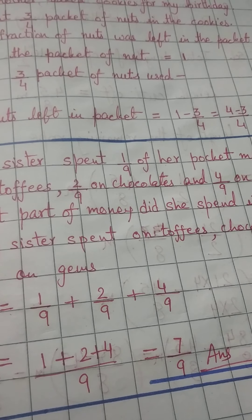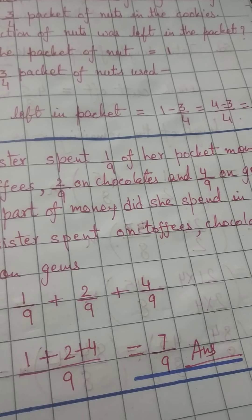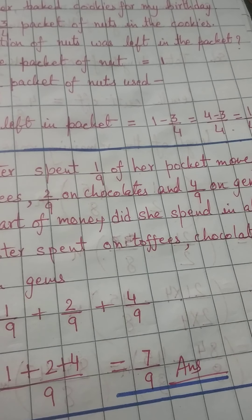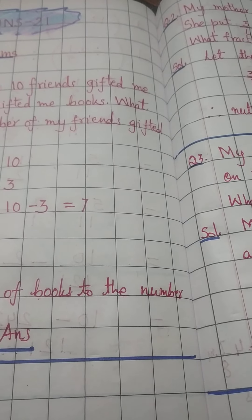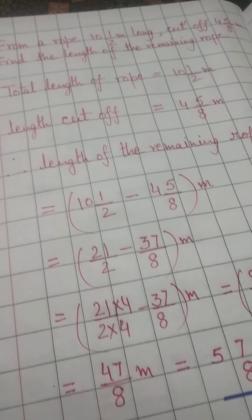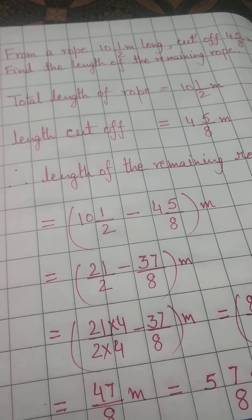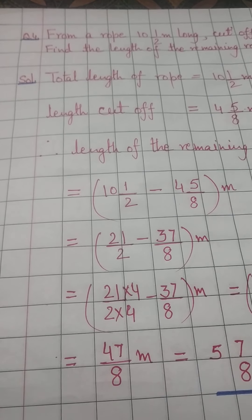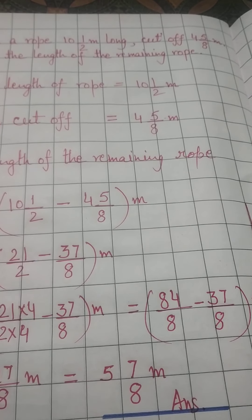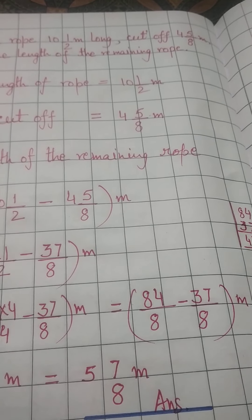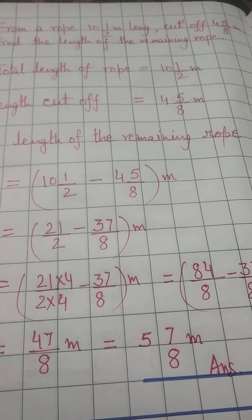So seven-ninth of her pocket money she spent on these things. The question is clear — please do this question yourself as well. Next question is a very good one: From a rope of 10 and a half meters long, 4 and 5/8 meters were cut off. Find the length of the remaining rope.